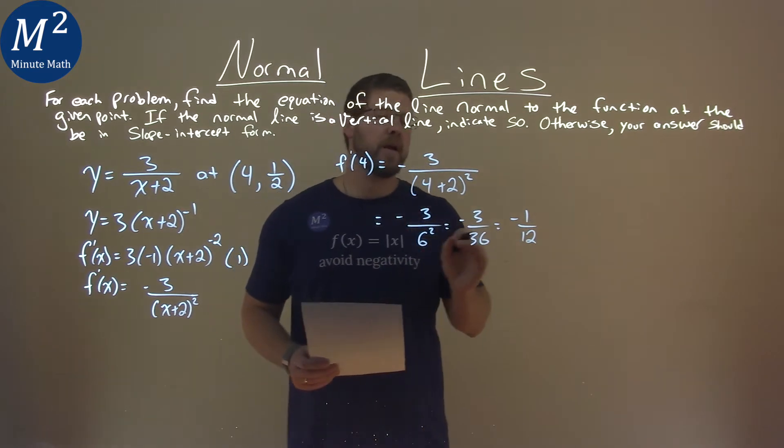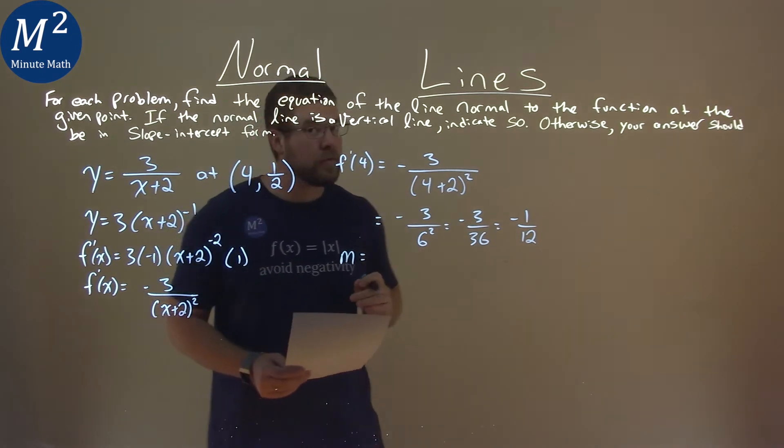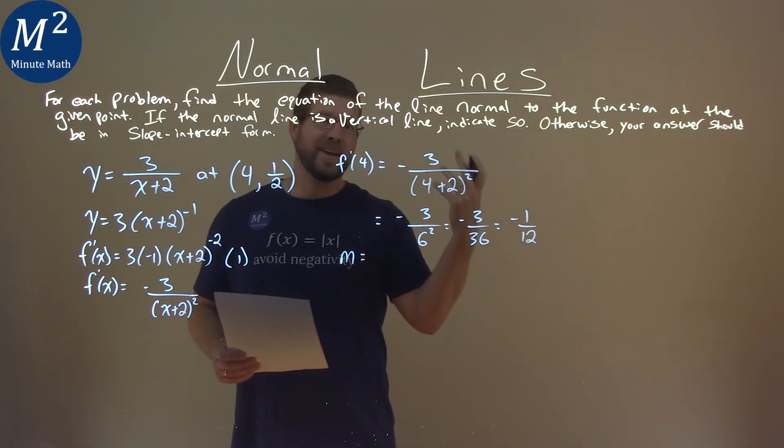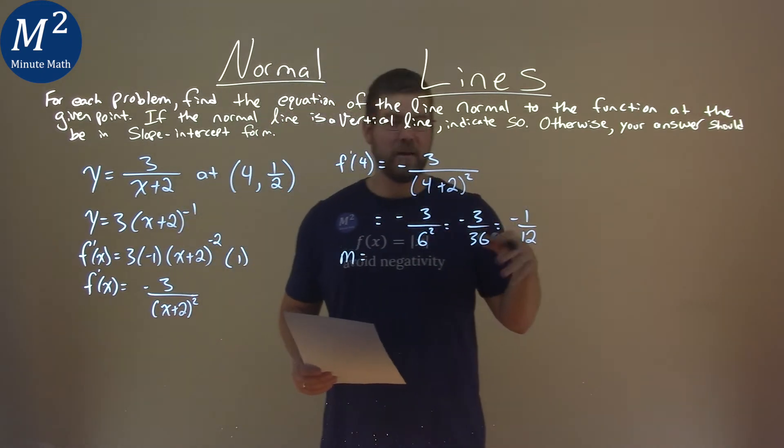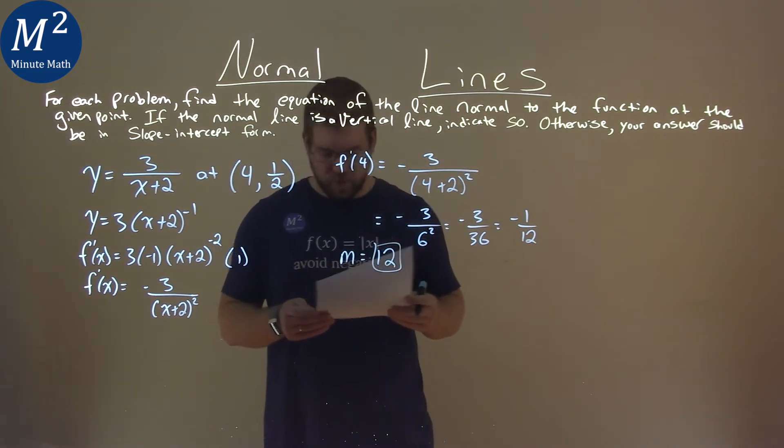So, if the tangent line has a slope of negative 1 over 12, our normal line will have a slope of the opposite reciprocal. Flip it, make it, put a negative sign on it, which makes it positive, and so we have positive 12 here as the slope of the normal line.